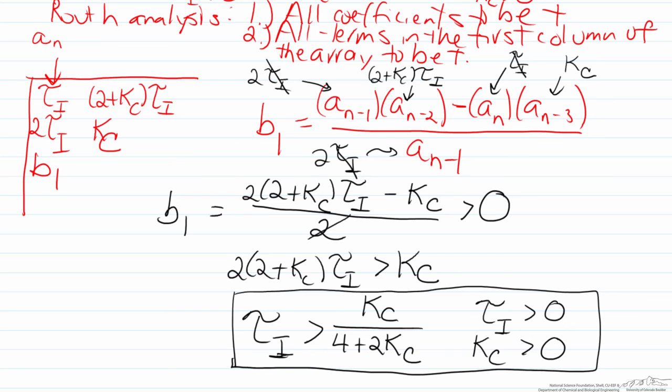So the important point to note here is the fact that the stability of this process is dependent on both Kc and tau I. In this screencast we showed how to assess the stability of PI controllers and also to note and see the interaction effects that occur between the two parameters of a PI controller, Kc and tau I.